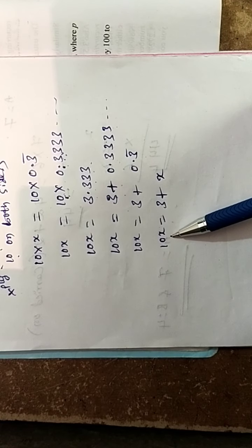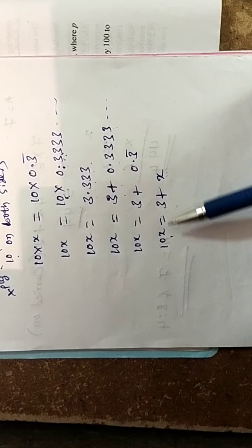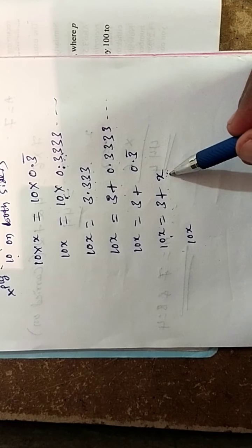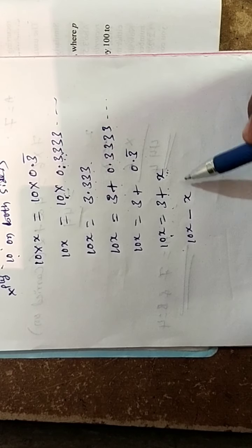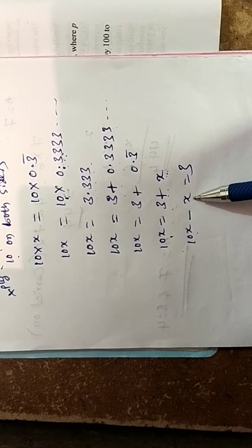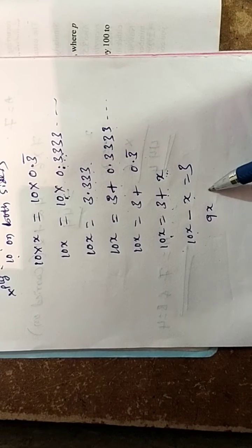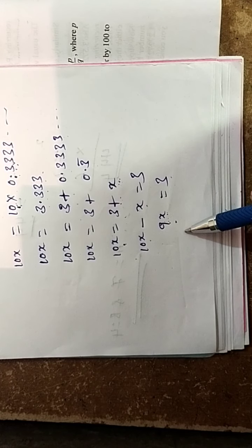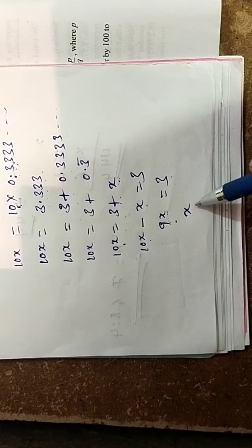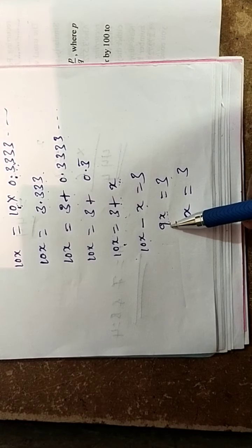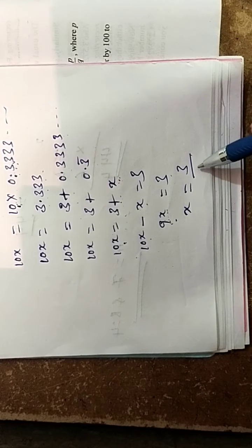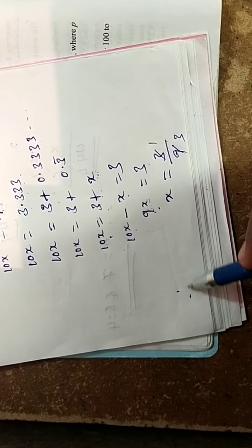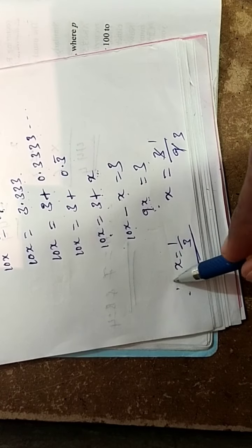So 10x is equal to 3 plus x. Bringing x to the left hand side: 10x minus x is equal to 3. So 9x is equal to 3. Therefore x is equal to 3 by 9, which simplifies to 1 by 3. This is in the form of p by q.